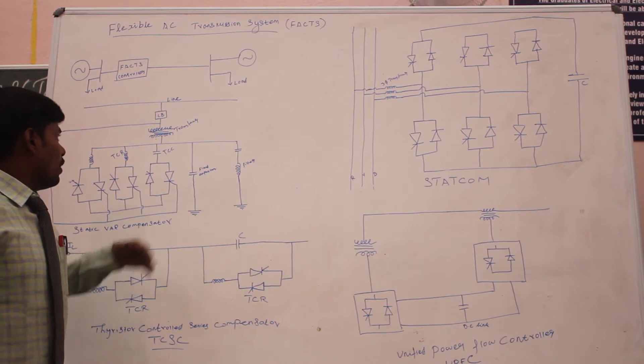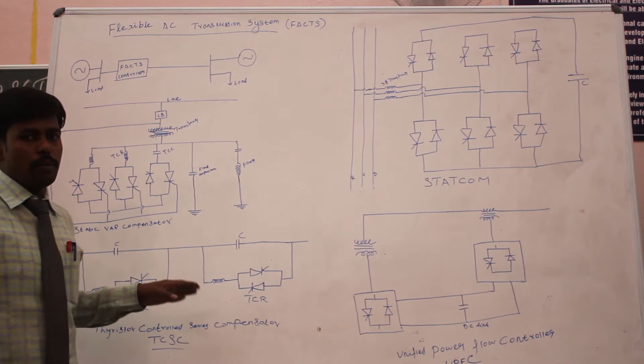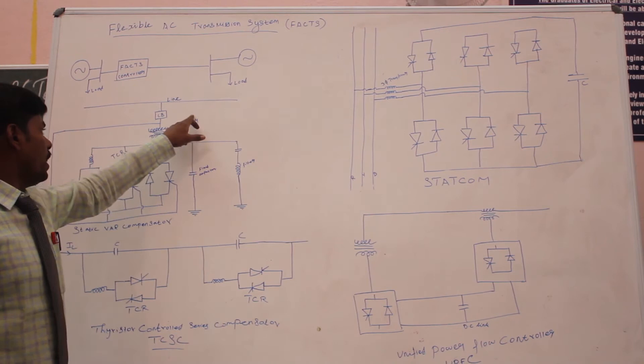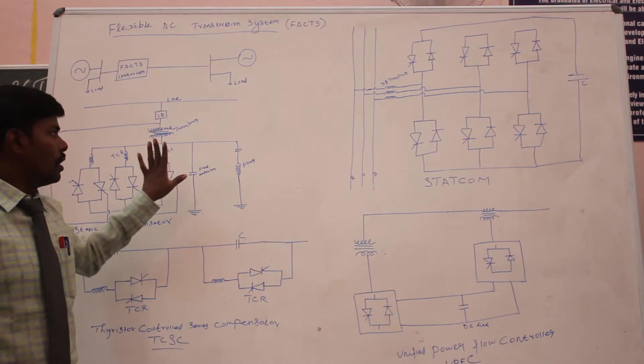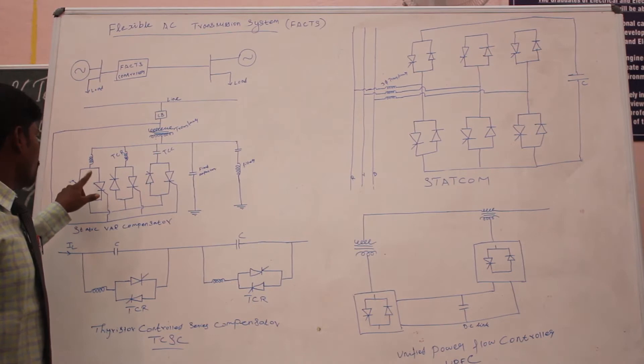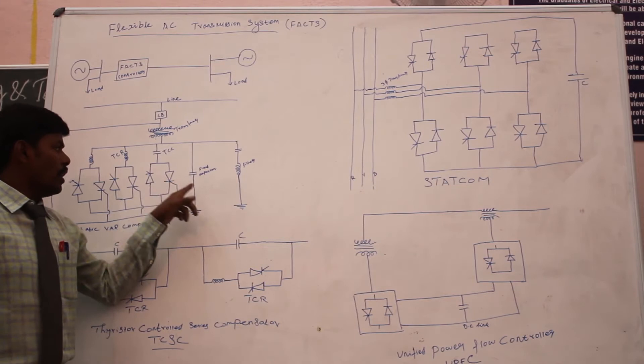First we are going to see the static power compensator. This static power compensator is a shunt control device. Here I have the transmission line, and here I have the thyristor controlled reactor. Thyristor capacitor controllers are used to make up the static power compensator, using the thyristor controlled reactor, thyristor controlled capacitor, fixed capacitor, and filters.